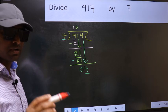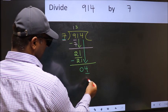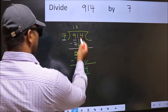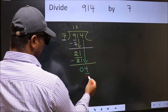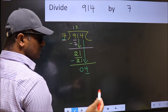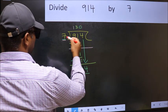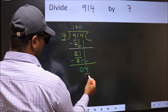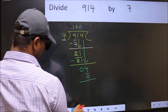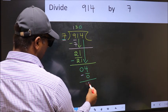Instead, what you should think of doing is, which number should we take here? If I take 1, we will get 7. But 7 is larger than 4. So what we should do is, we should take 0. So 7 into 0, 0. Now you should subtract. 4 minus 0, 4.